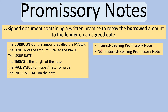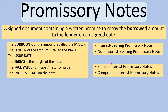In an interest-bearing note, you have the principal and you calculate the interest on top of that, paying it back at the end of the agreed date. In a non-interest-bearing note, you already have the maturity value and you calculate the present value — it already accounts for the interest you'll be paying back. We'll look at both simple interest and compound interest promissory notes in this video.